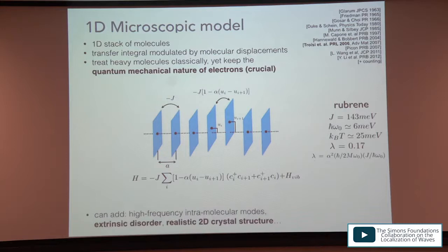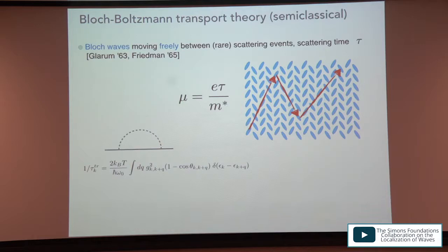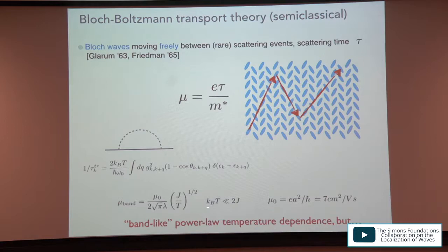Applying semi-classical Boltzmann theory to this model, the scattering time has an analytical expression, and plugging it into the mobility formula does indeed give a power law in temperature — which seems to explain everything.